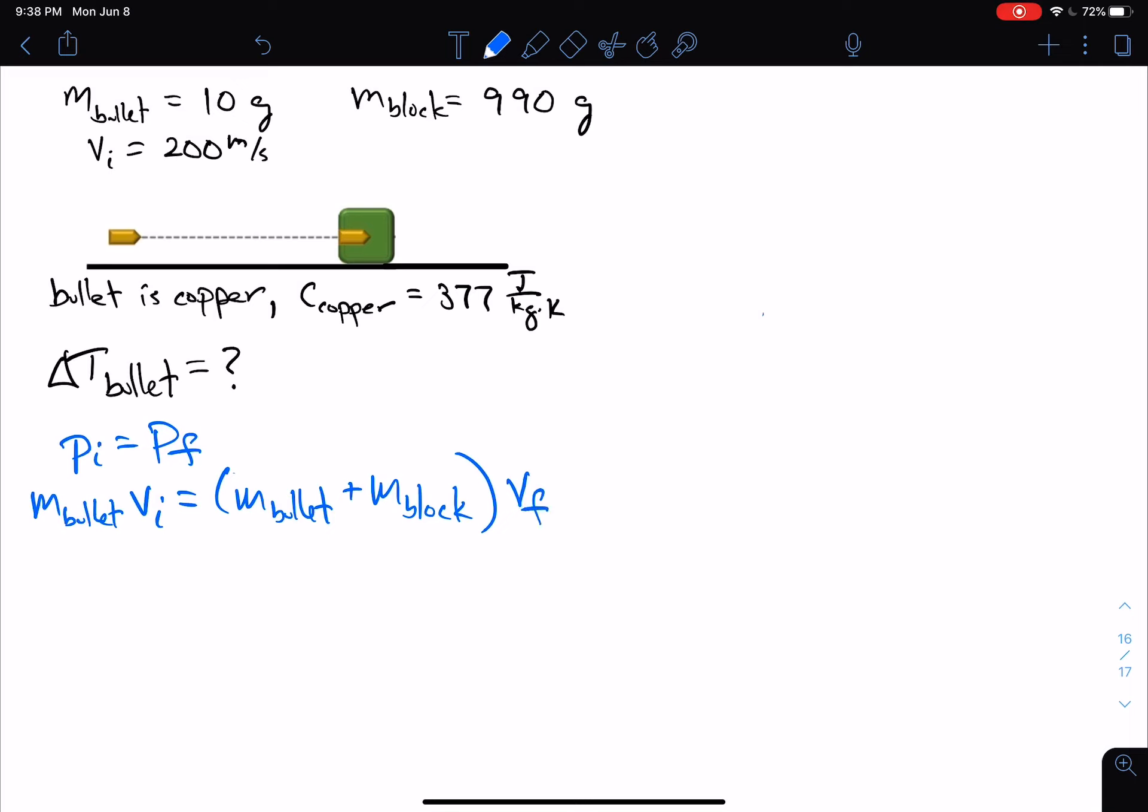The values for the masses and the initial speed are all given above. The mass of the bullet is 10 grams, the initial speed is 200. Then I'm taking that 10 grams and add it to the 990 grams of the block. Solving for V final, this is going to be 10 times 200 is 2,000, and I'm going to divide it by 10 plus 990, which is 1,000. That's going to equal V final, and that's going to end up being 2 meters per second.